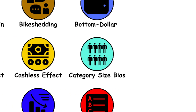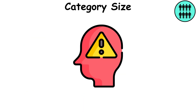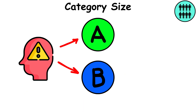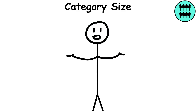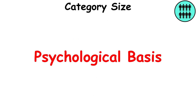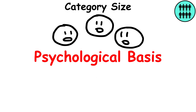Category size bias. This is a mental error made when we assume outcomes are more likely when they belong to a larger category or sample group. Whether or not the bias has a psychological basis, however, is still up for discussion.